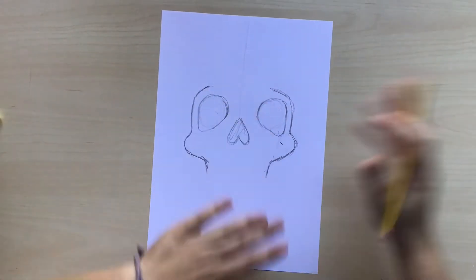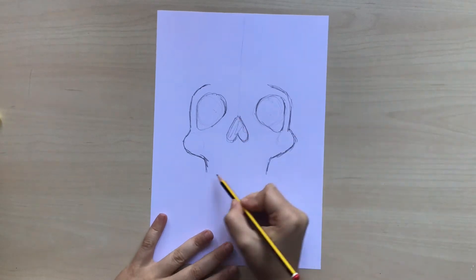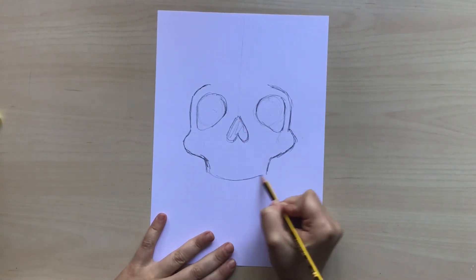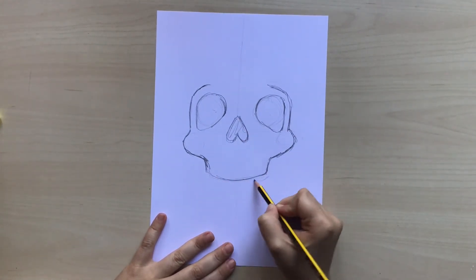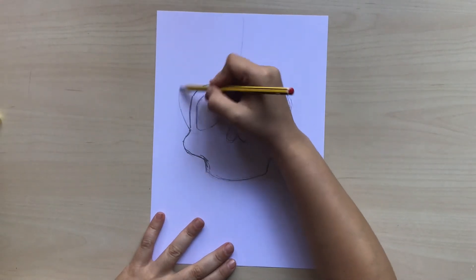I messed up a little bit in here, it's okay I'm going to erase it and now I'm going to draw the jawline. It's not going to be a straight horizontal line, it's going to be a little bit curvy.